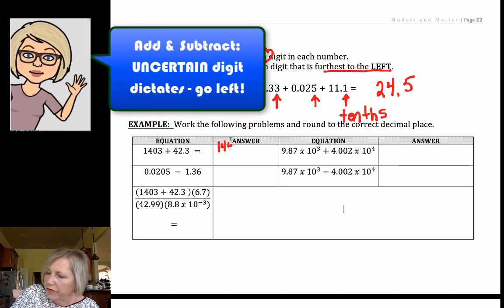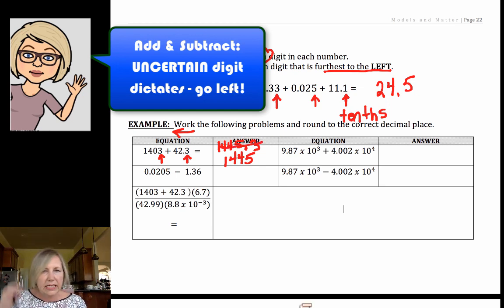So you want the uncertain digit furthest to the left. In this case, our answer would be 1445.3, but that uncertain is the tenths. This uncertain is the ones place. The ones place is furthest to the left, so I would have to round that to 1445 when I got my correct significant figures. Now just a hint: I don't round until the very end. I like to determine my number of significant figures, complete all of the mathematics, and then round. You'll get fewer errors.